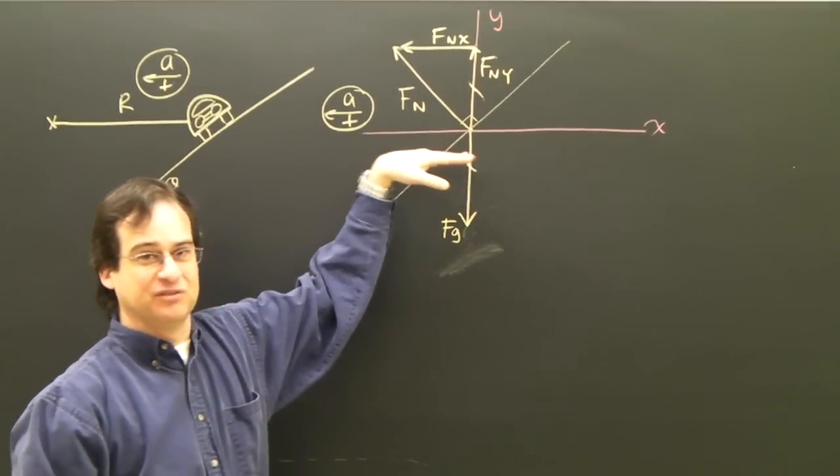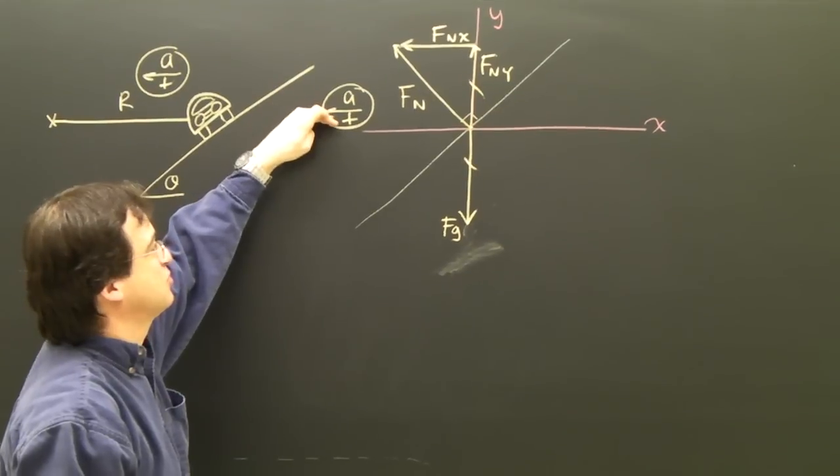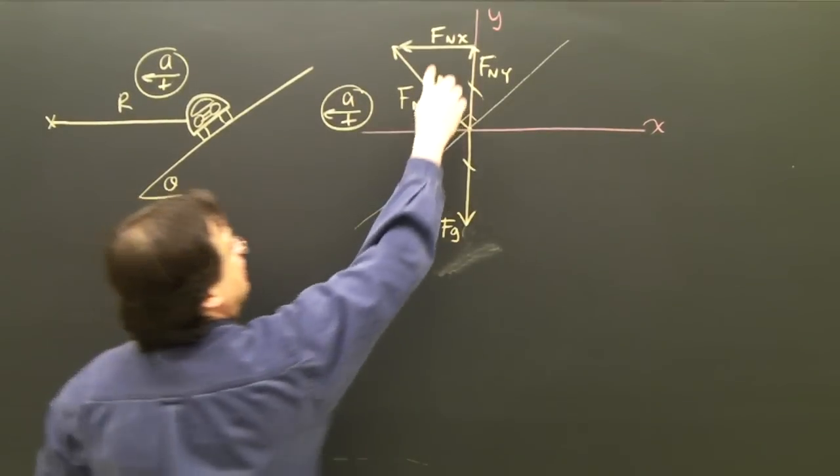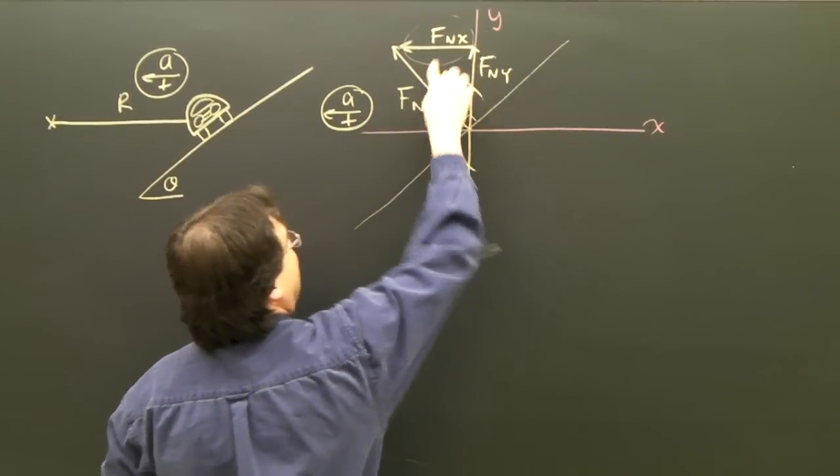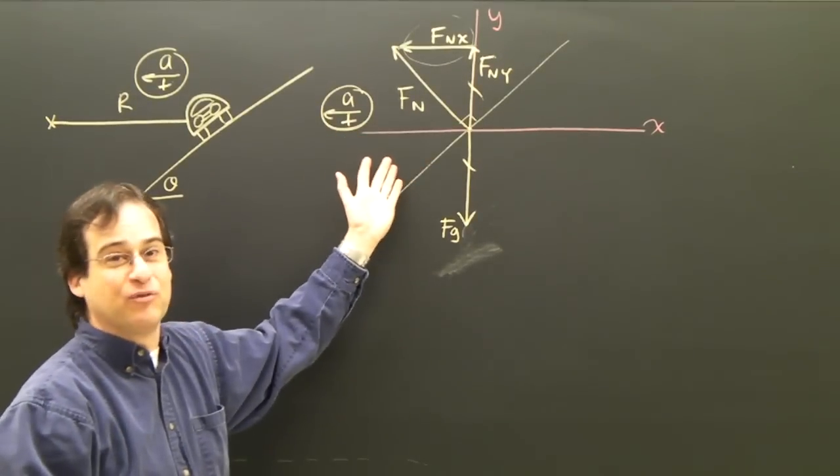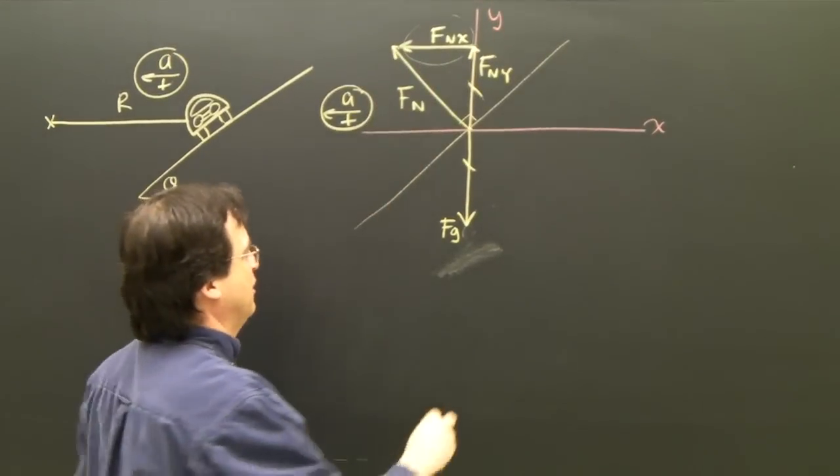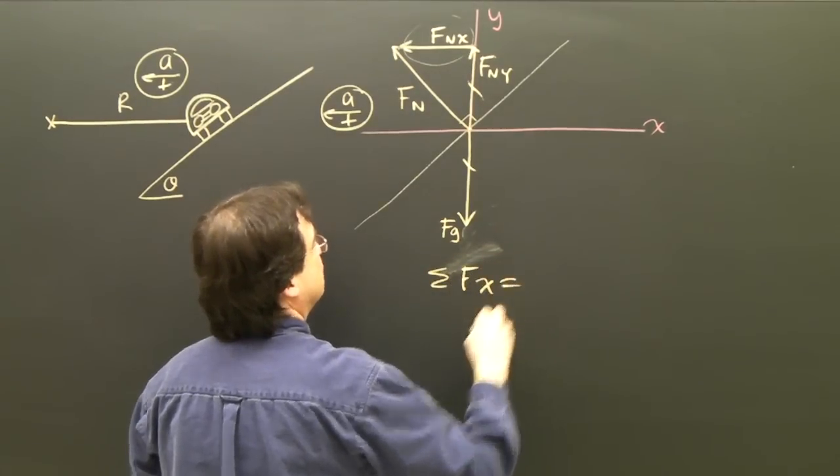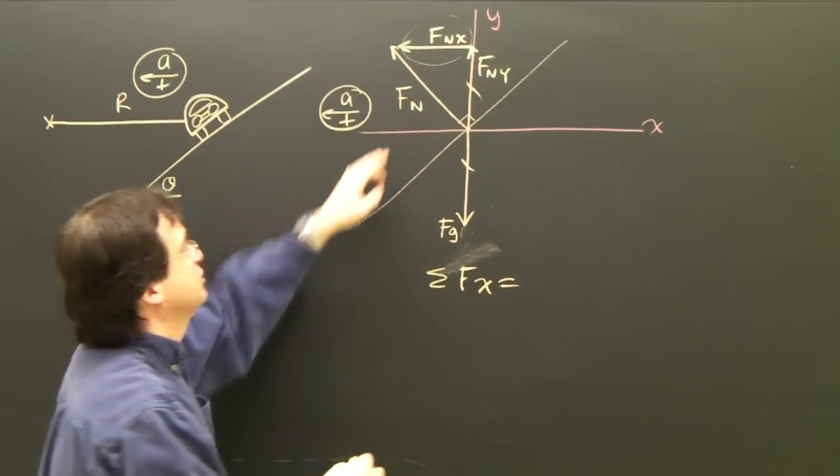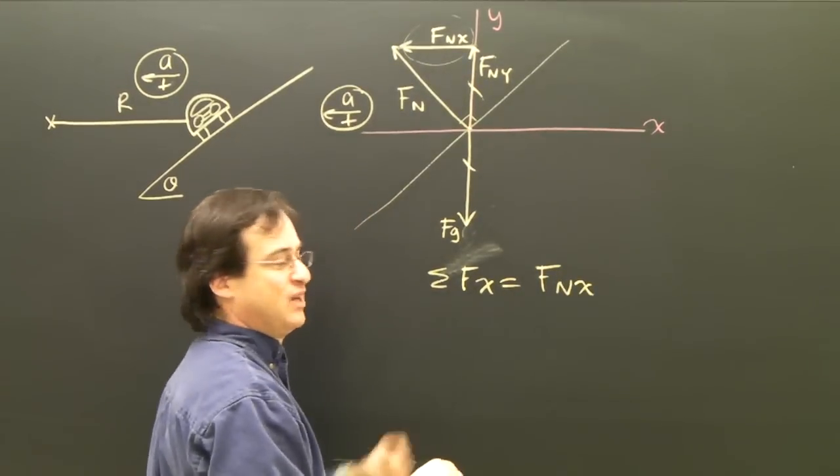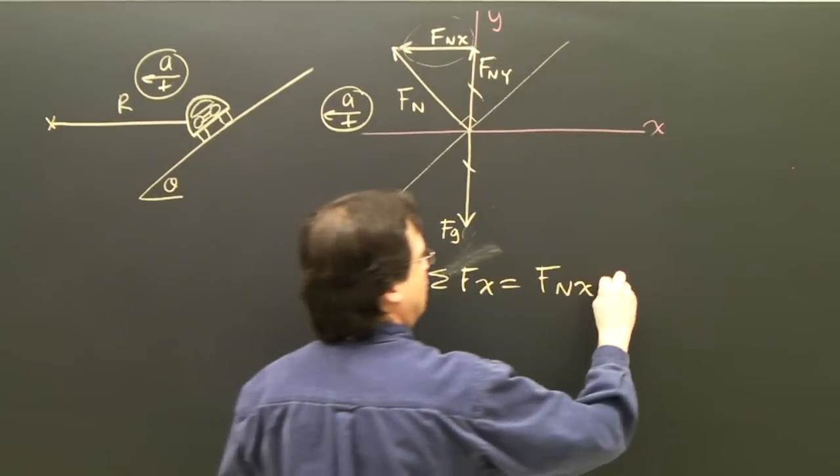What about the x direction? It's accelerating this way, so there needs to be more force this way than any other way. And if I look, there it is right there. That's the force that's causing this centripetal motion. There are no other forces in that direction, so that's the only one. So I say the sum of the forces in the x direction, I'm going to add them up and that's going to give me an equation. Fn,x is the only one. And in the x direction, it's going to equal ma.